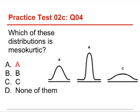Just as a quick reminder, some people get confused and they think when they read meso, they think mesa, like a flat plateau, and then so they choose the platocurtic one. That's not correct. It's meso, like mesoamerica, or mesomorph. And it means middle.